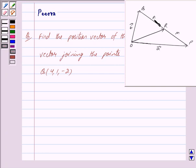Then the position vector of the point R is given by vector OR equals M times vector B plus N times vector A upon M plus N.